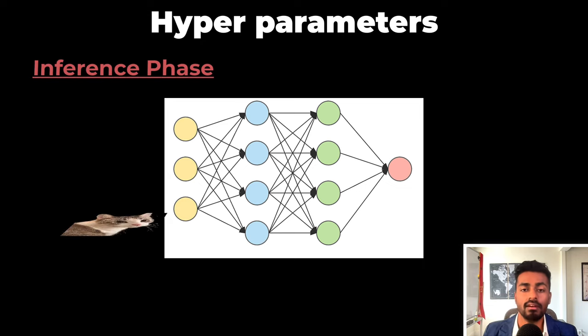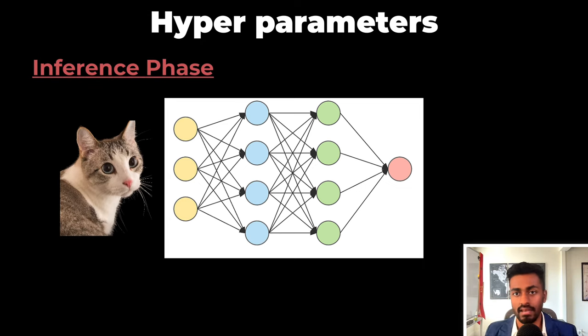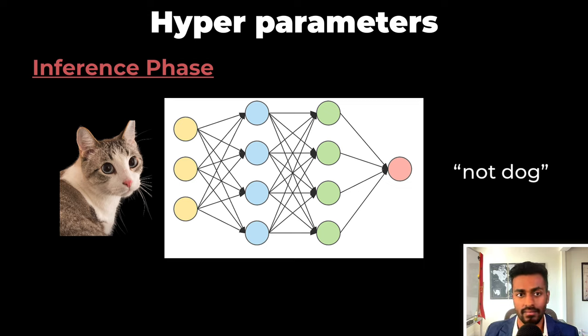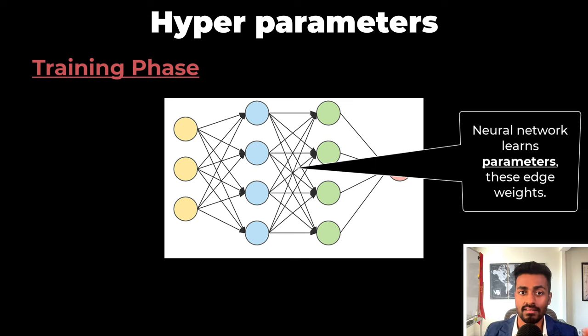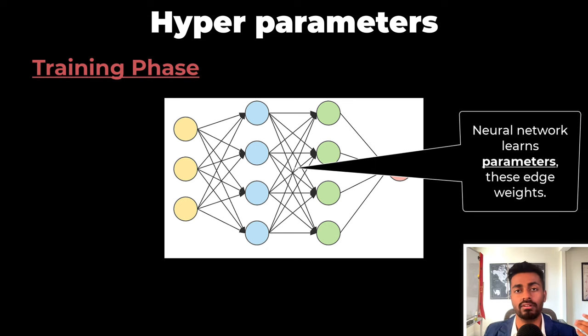During the inference phase, we can pass some unseen image and determine if it is a dog or not. Now during the training phase, the neural network would learn some parameters, these edge weights.